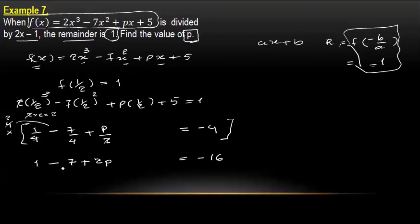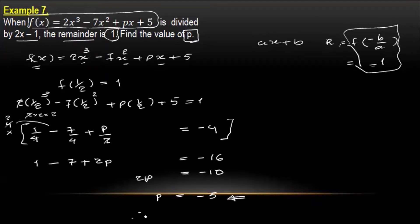This is 1 minus 7 equals minus 6. We will see it then plus 6. We will see b equal to this, and minus 6. This equation equals 8. Therefore b equals 5, equal to minus 5.